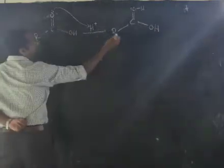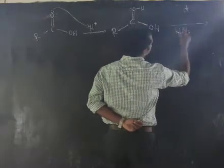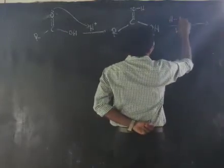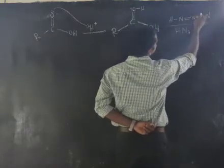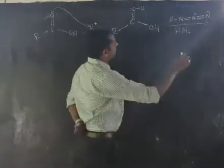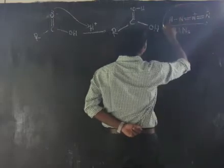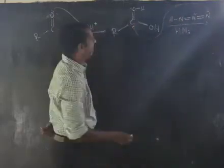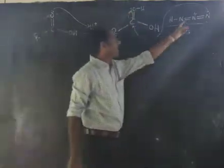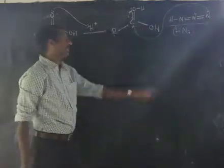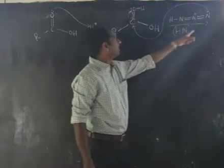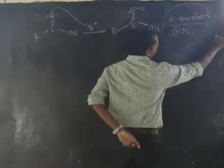In the next step, hydrazoic acid (HN₃) comes in. The actual structure of hydrazoic acid is H-N⁺=N=N⁻ — this nitrogen has four bonds so it is positive, and the terminal nitrogen is negative. The negatively charged end of hydrazoic acid attacks at the positively charged carbon. One of the C=O bonds shifts its electrons to oxygen, so hydrazoic acid acts as a nucleophile attacking the positively charged carbon.